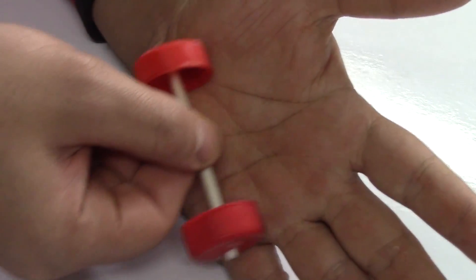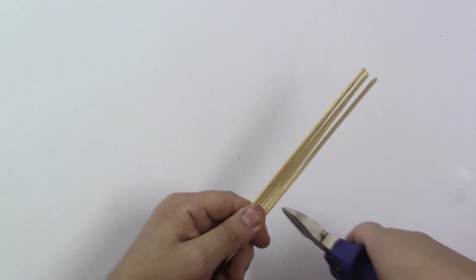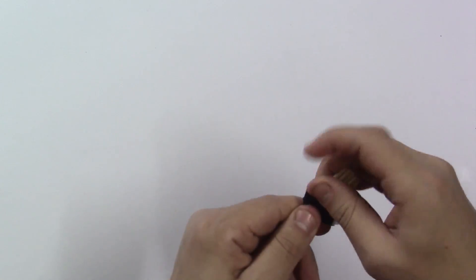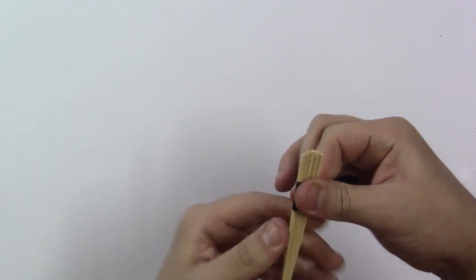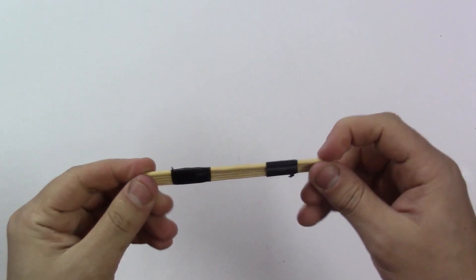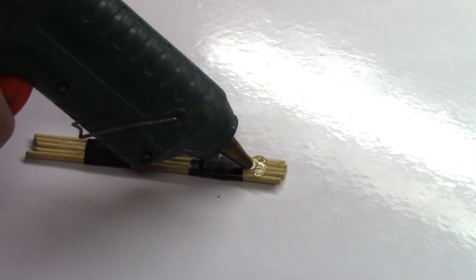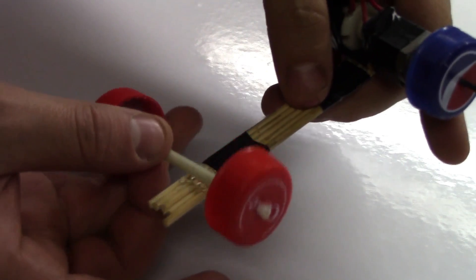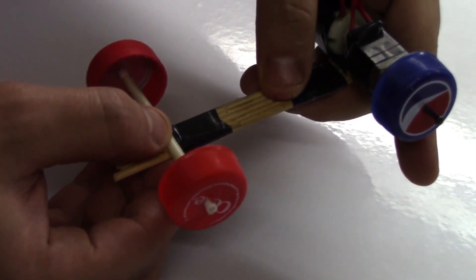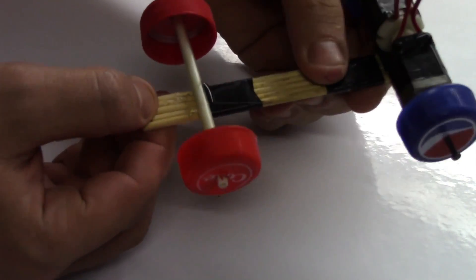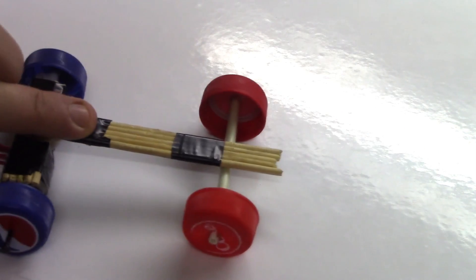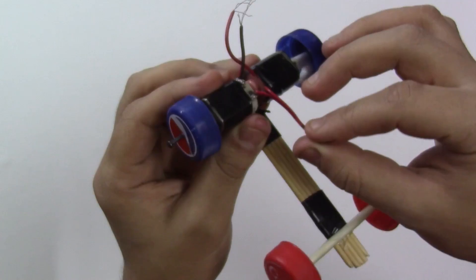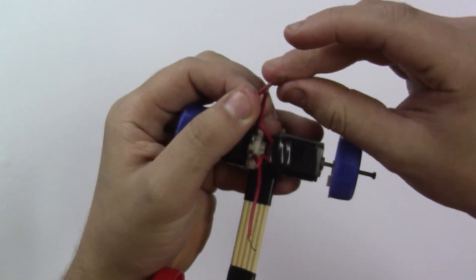Bring the remaining skewers and cut off four and a half inches, then tape them all together using electric tape like this. Using hot glue, glue the front wheels and back wheels on the skewers like this. This is how it's gonna look like.